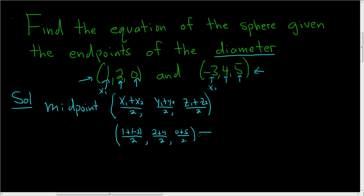So this ends up being 1 plus negative 3 is negative 2, so we get negative 2 over 2. Here we get 2 plus 4 so we get 6 over 2, and here we just get 5 over 2. So this cleans up to be negative 2 over 2 is negative 1, 6 over 2 is 3, and then 5 over 2 is simply 5 over 2. So this is our center.